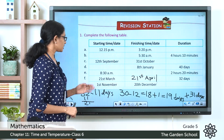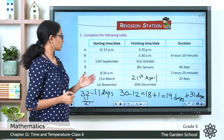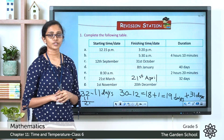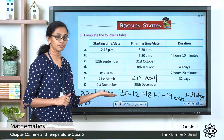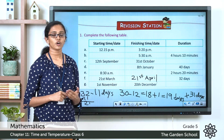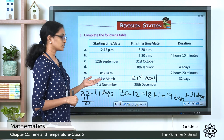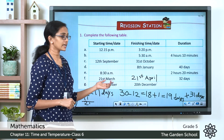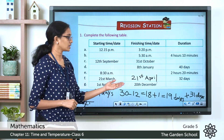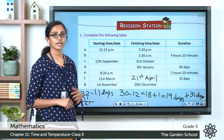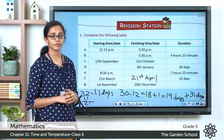The last one: starting date is 1st November and finishing date is 20th December; find the duration. November has 30 days total. From 1st November there are 30 days in the month, plus the first 20 days of December, that is 30 plus 20, giving you the total duration of this time period.